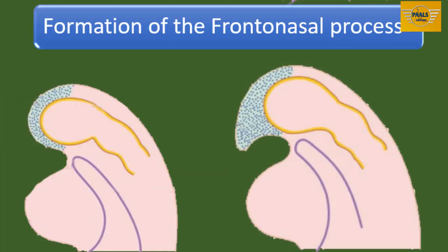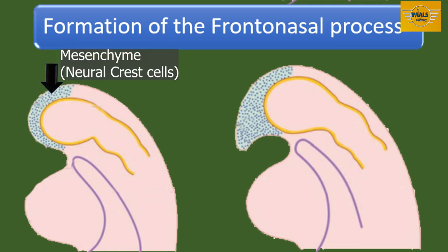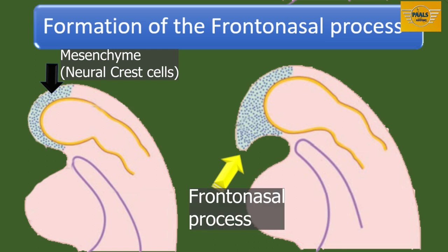We will consider the formation of the first facial process, the frontonasal process. The mesenchyme covering the developing forebrain and midbrain will proliferate forward and anteriorly to form a downward projection, which overlaps the upper part of the stomatodeum. The name of this downward projection is the frontonasal process.